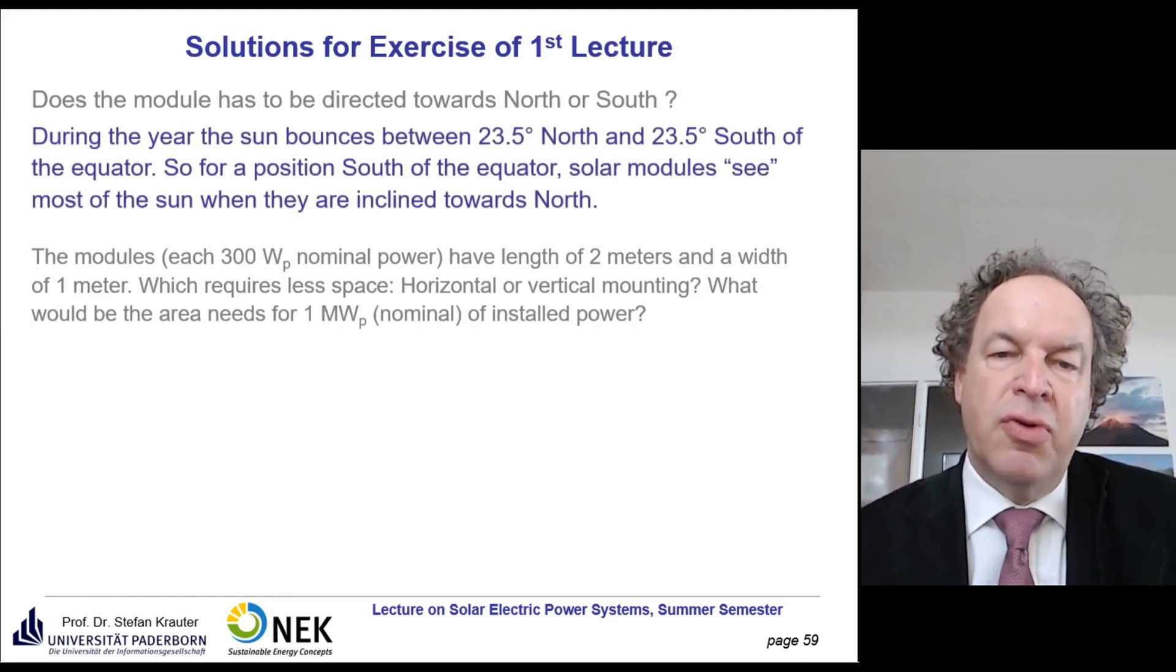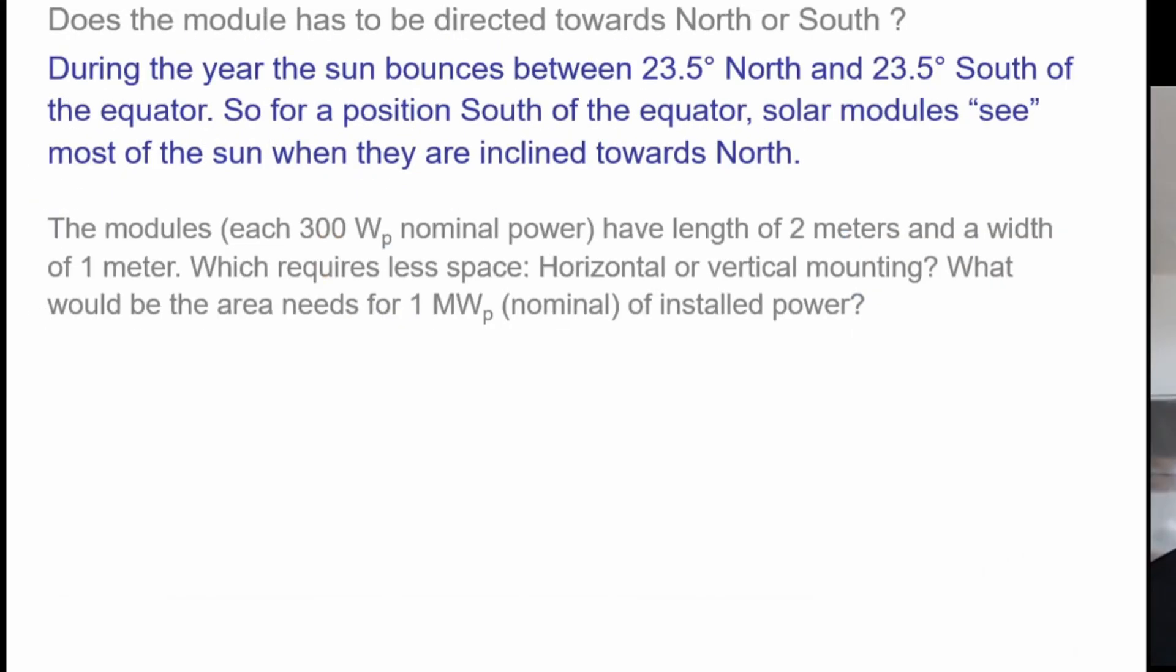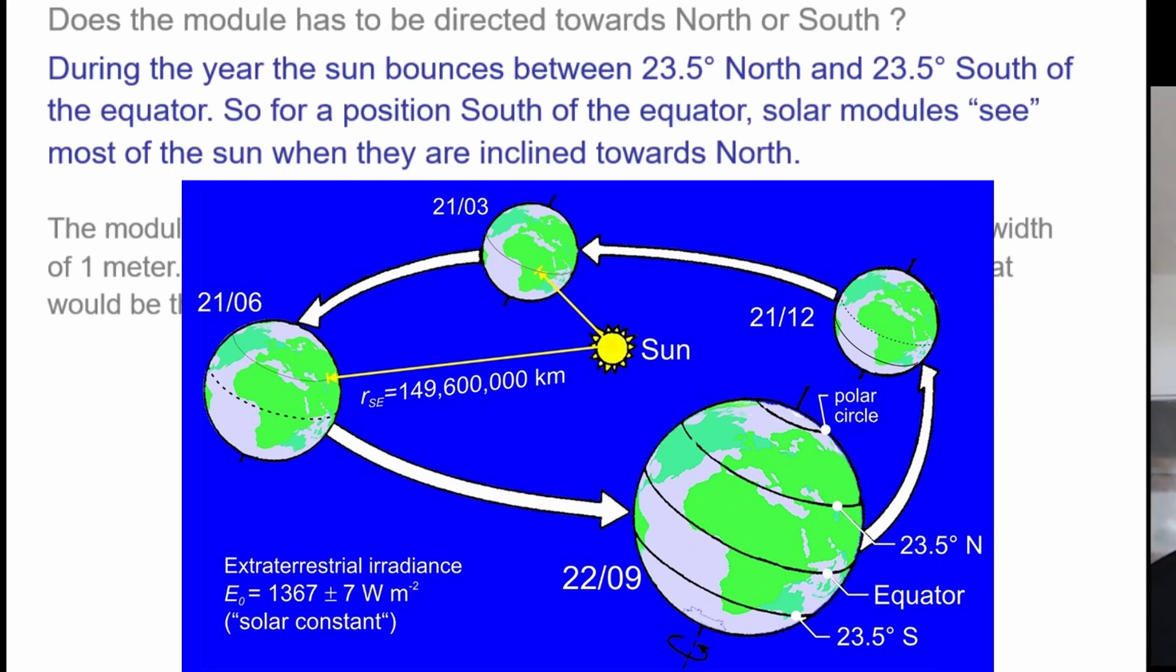So this was already answered. It says the module has to be directed towards north or south. Just a repetition. During the year, the sun bounces between 23.5 degrees north and 23.5 degrees south of the equator. So north is sure in our summer, this is 21st of June.